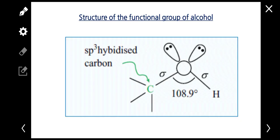First, let's talk about the structure of the functional group of alcohol. The key feature is the OH group, where carbon is attached to an OH group.